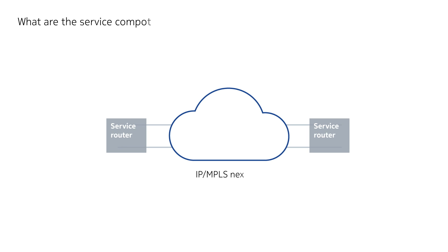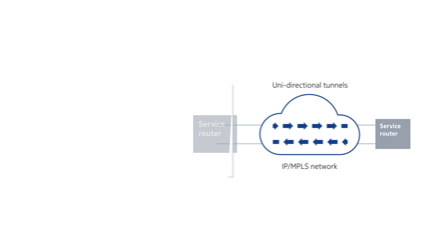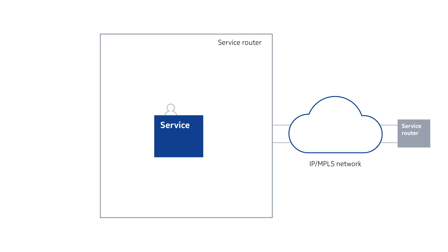When a service is provisioned on a Nokia router, data is transported across the network over end-to-end tunnels. There are four main service components needed to construct a service. One component is the customer entity. A customer is associated with a set of specially created services and is denoted by a customer ID.